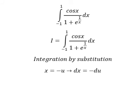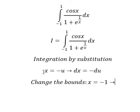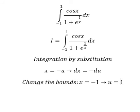Next, we need to change the bounds. When x equals to negative one, we substitute negative one here, so we get u equals to one.